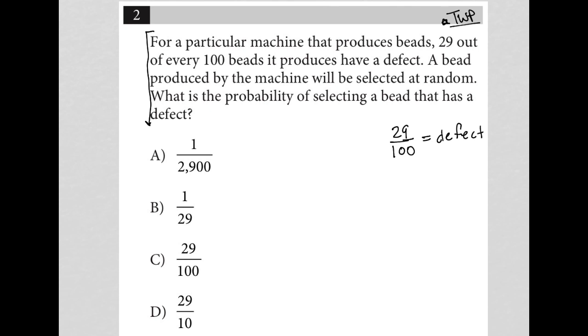The next sentence says, a bead produced by the machine will be selected at random. What is the probability of selecting a bead that has a defect? Well, in essence, we were just given that. That's literally the meaning of telling us how many beads have a defect out of every 100 beads. So 29 out of 100 is a probability of having a defect.